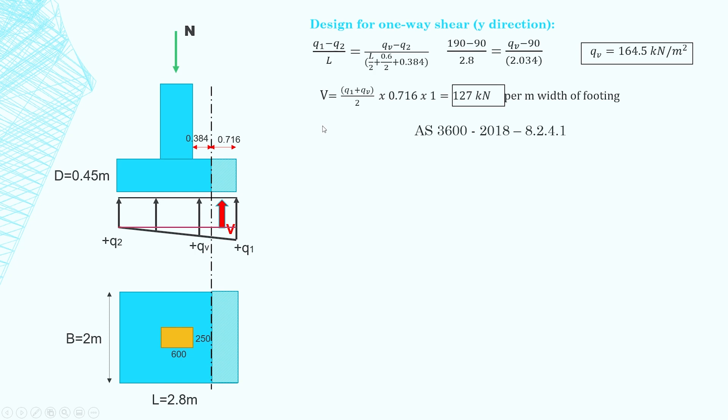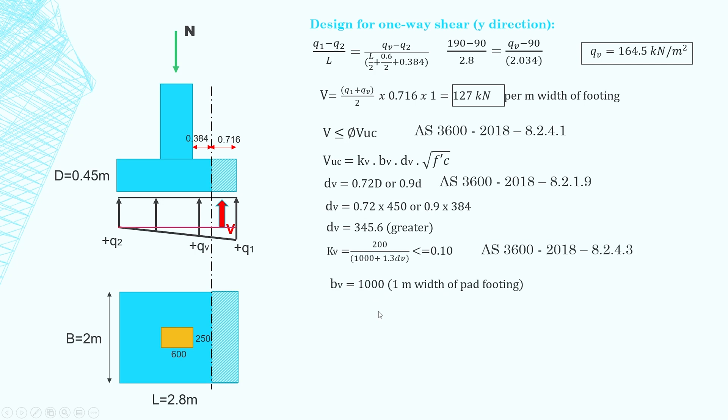And then as per clause 8.2.4.1 in AS3600, the shear force V needs to be less than the concrete shear capacity. And VUC is equal to KV times BV times DV times the square root of the concrete strength. DV is the greater of 0.72 times the height of the footing or 0.9 times the effective depth. And that comes from clause 8.2.1.9. DV works out to be 345.6 which is the greater of these two values. KV is equal to this formula here and needs to be equal or less than 0.1. You can find this formula in clause 8.2.4.3. BV is just a thousand which is one meter width of pad footing. And then plugging the numbers into the equation, VUC works out to be 172.8 kilonewtons.